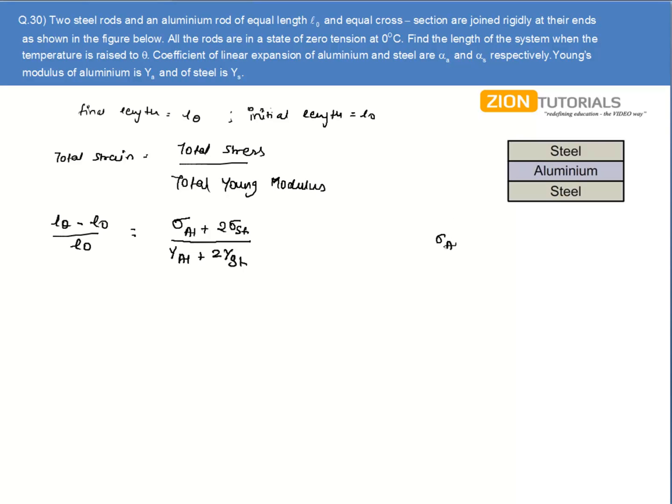Now sigma of aluminum can be written as strain, that is change in length equal to (L_theta - L0)/L0 times gamma of aluminum. Now this is nothing but the longitudinal strain.